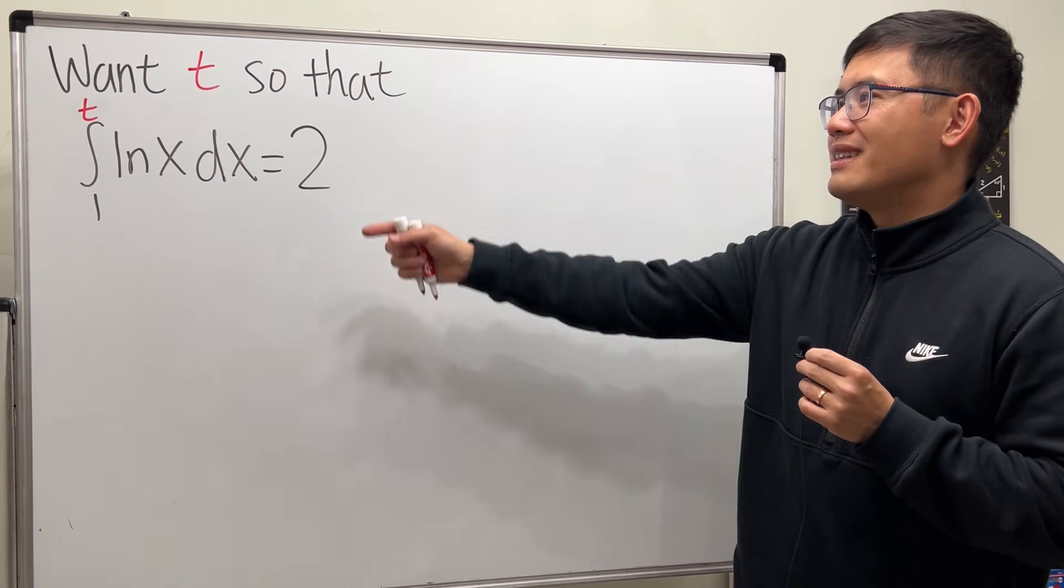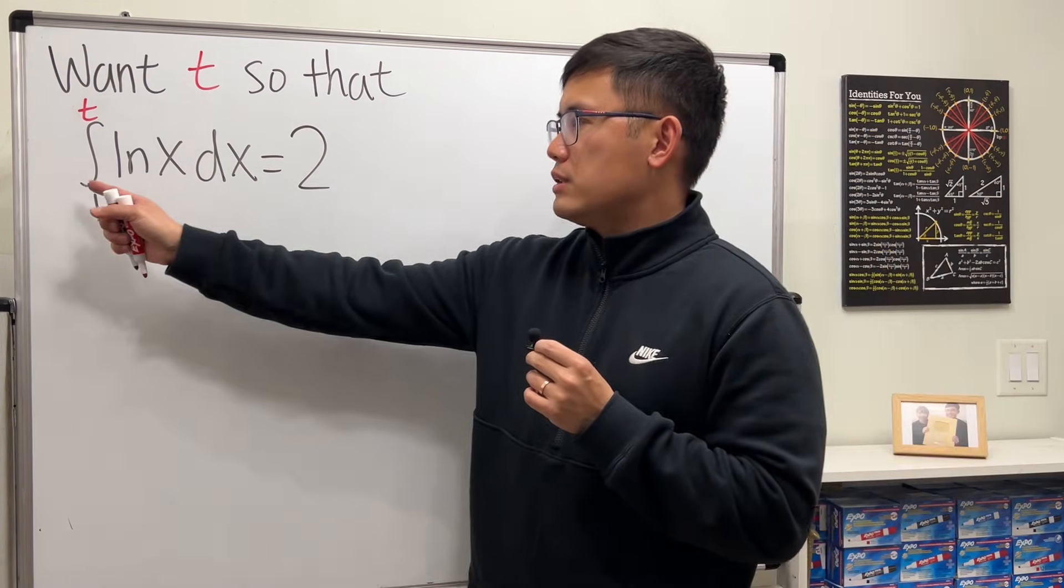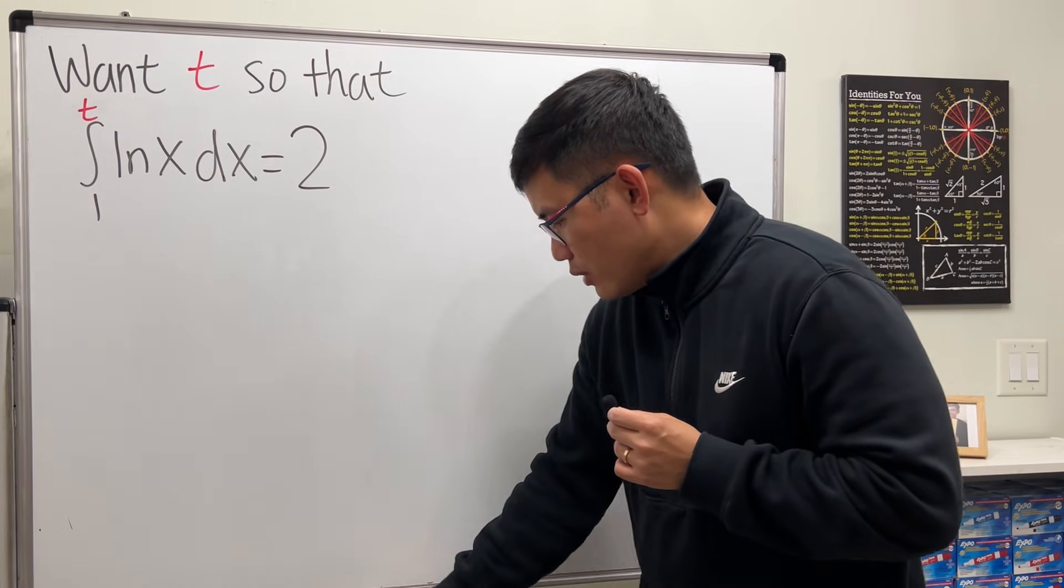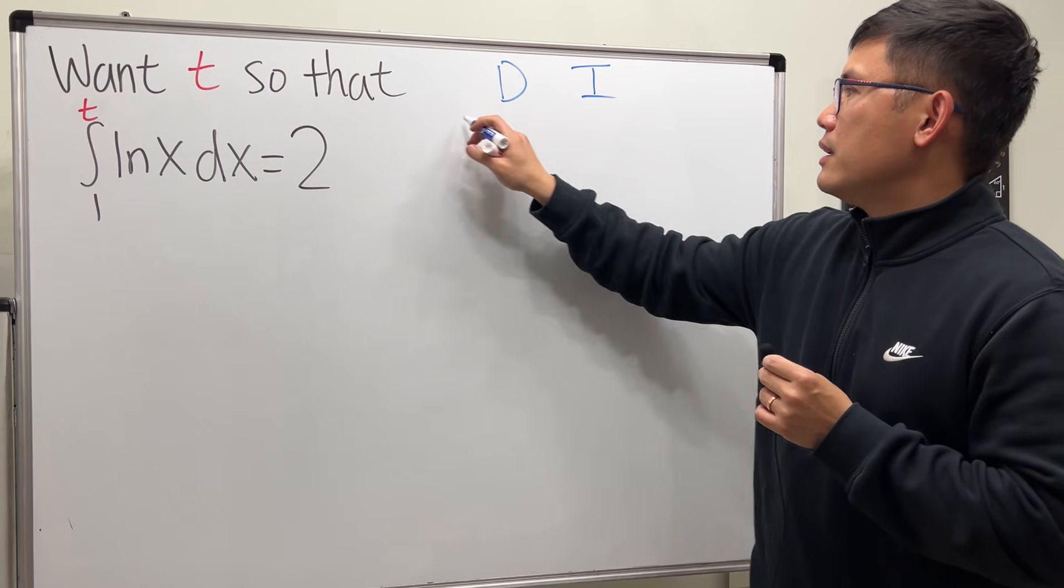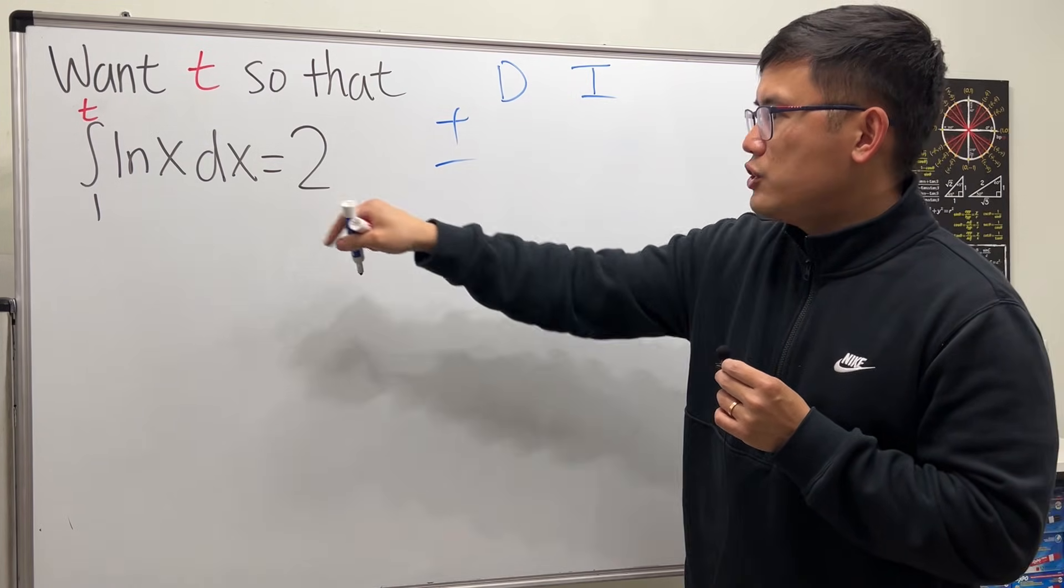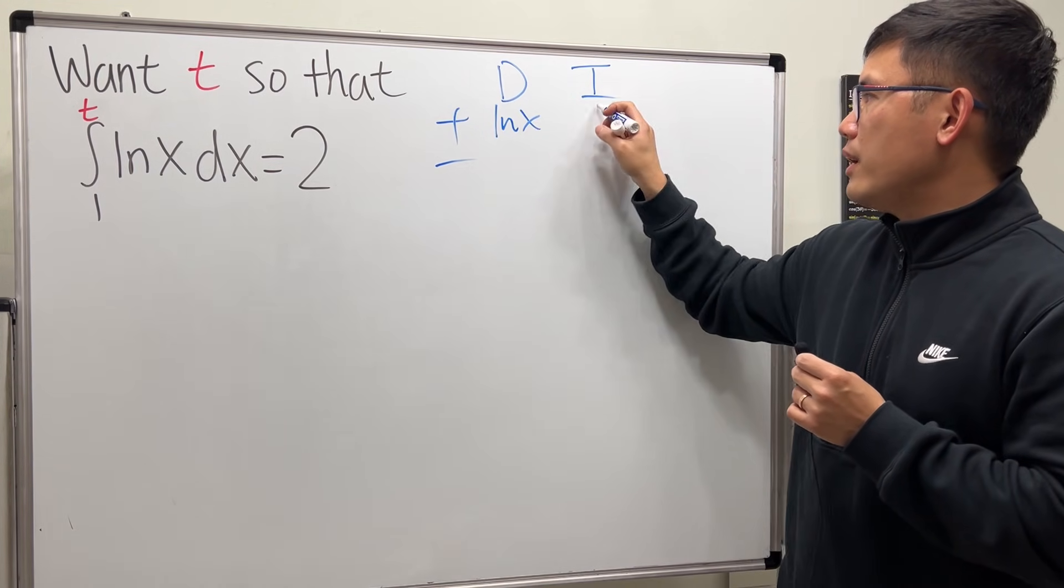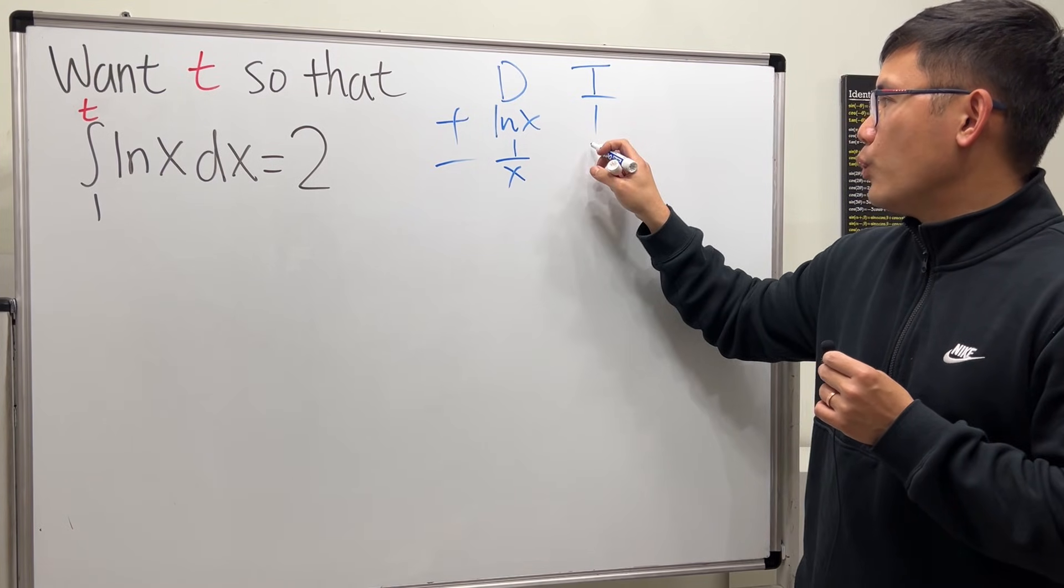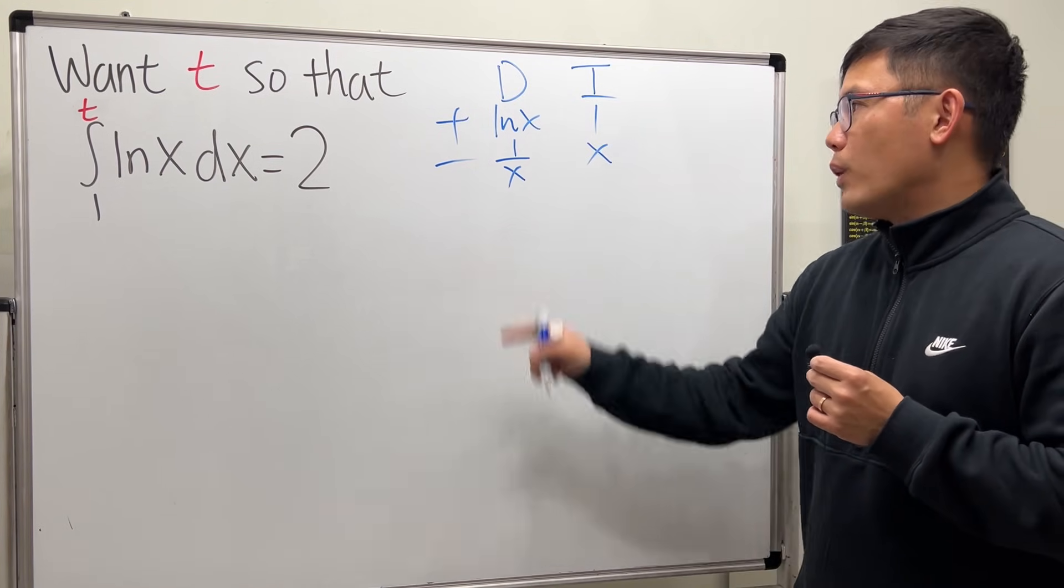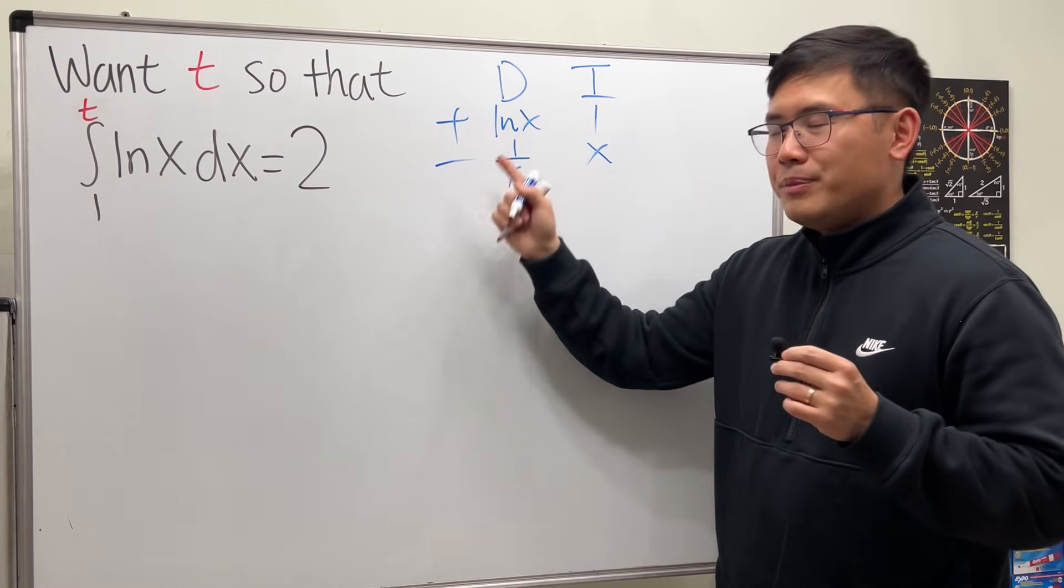Done? Okay, let's have a look. First, let's just integrate ln(x), and to do so we use integration by parts. Of course we do the DI right here, so I will differentiate ln(x) and I'll integrate 1. Differentiating ln(x) I get 1 over x, and integrating 1 I get x.